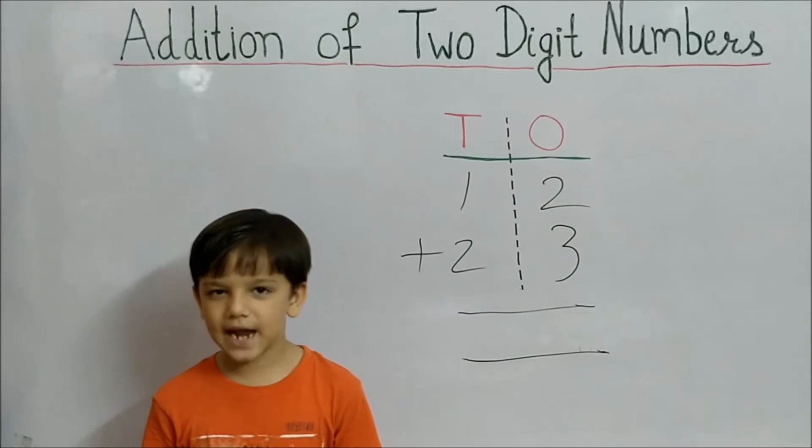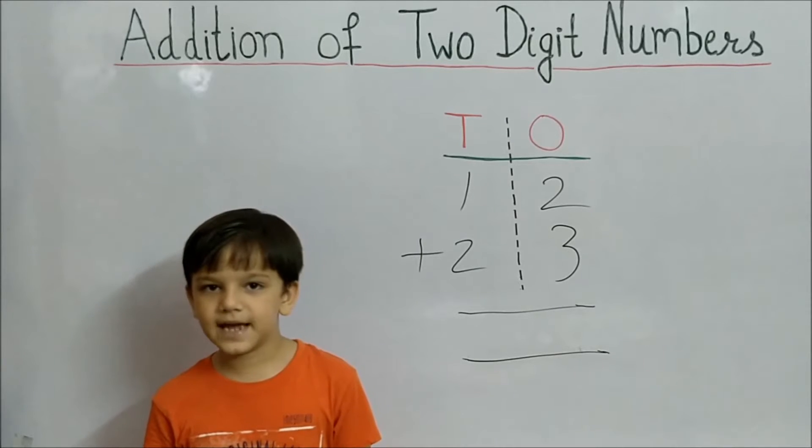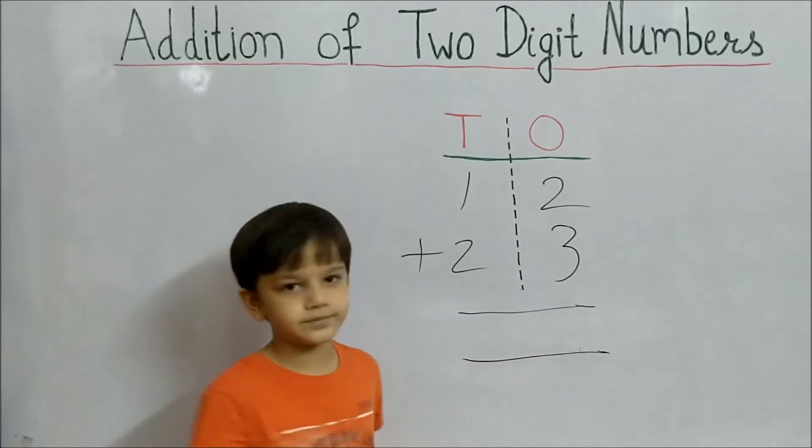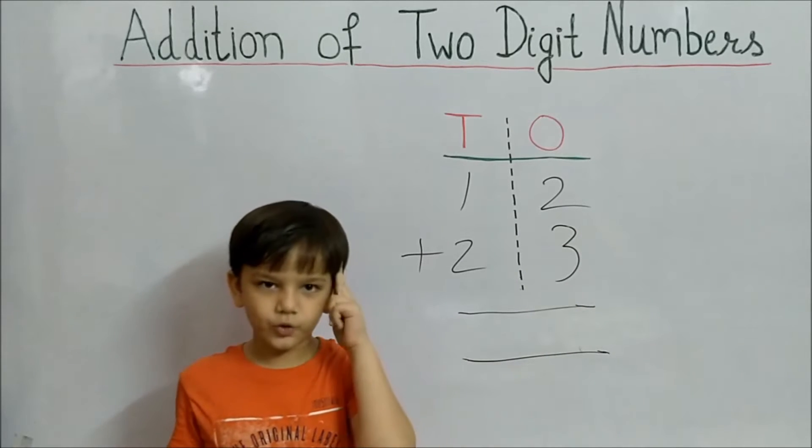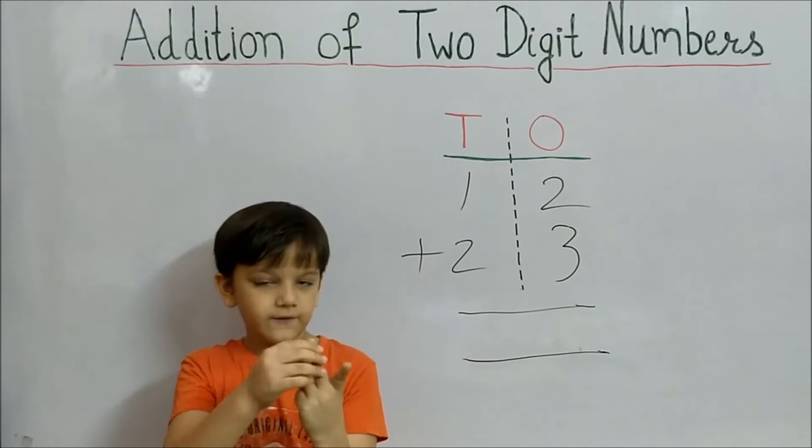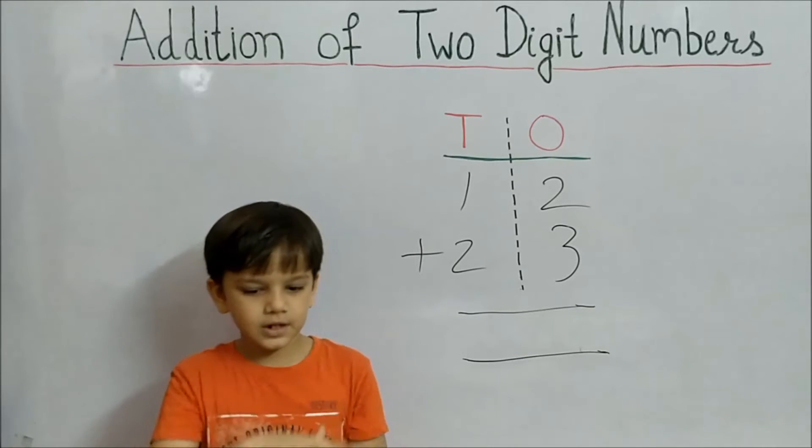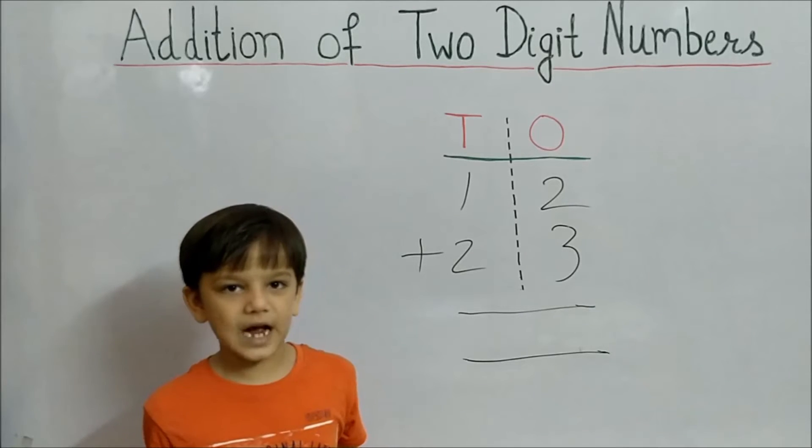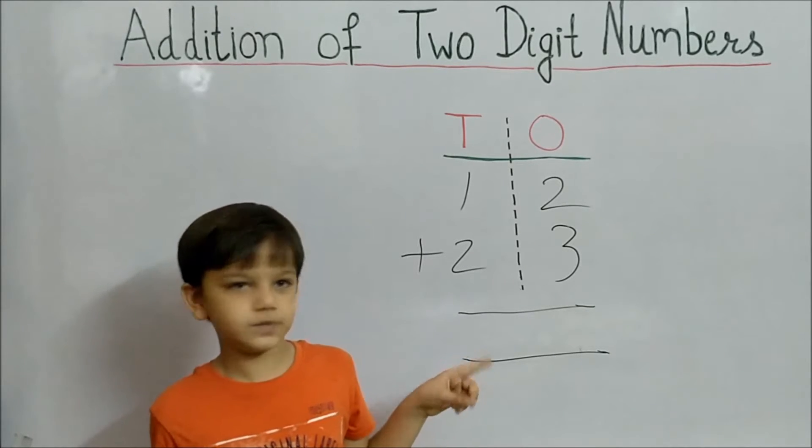First add ones place, that means we have to add 2 and 3. So, 2 in your mind, 3 fingers up: 3, 4, 5. So answer is 5. Write 5 below ones place.